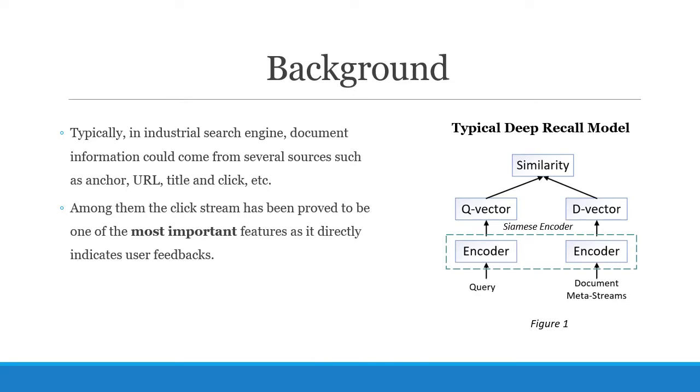Here is an example of a typical deep model in recall procedure. Unlike queries, Siamese encoder extracts the representation of documents from multiple meta streams. After getting the representation of query and document independently, the model calculates the similarity of query and document by metric function. Among meta streams that documents use, the click stream has been proved to be one of the most important features as it directly indicates user feedbacks.